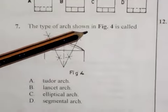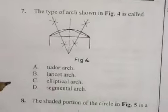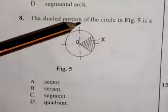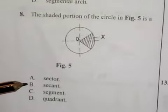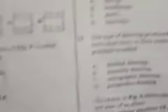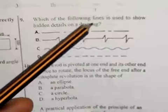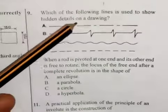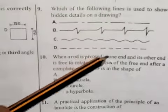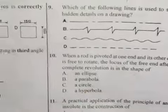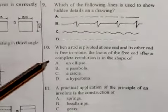Question 7: the type of arc shown in figure four is called a segmental arc. Question 8: the shaded portion of the circle in figure five is a sector — option A is the answer. Question 9 asks which line is used to show hidden details on a drawing. The answer is option D — a short dashes line is used to draw the hidden details of an object.